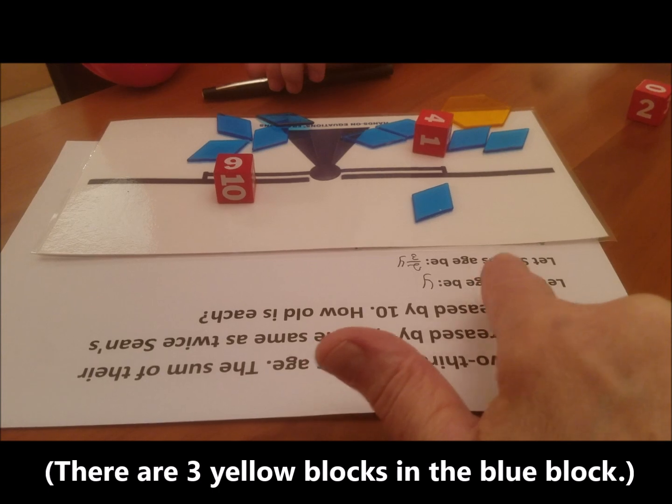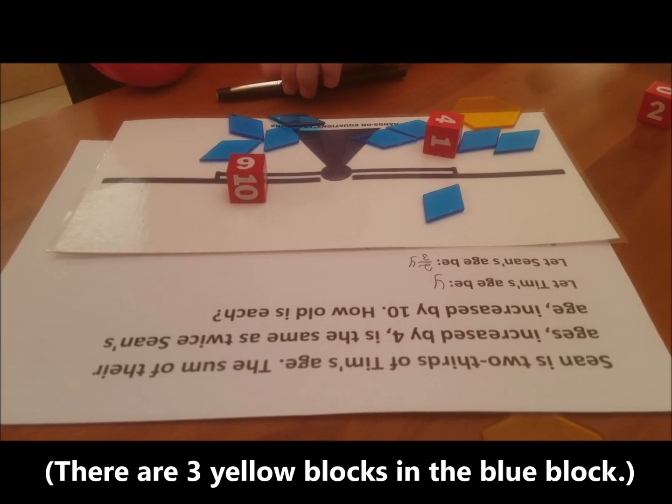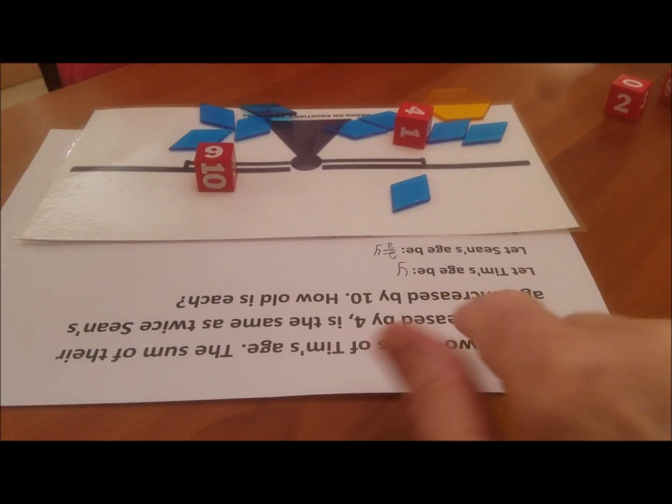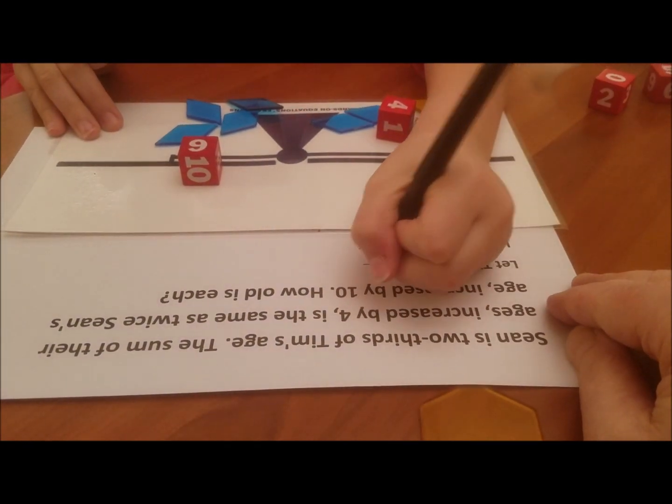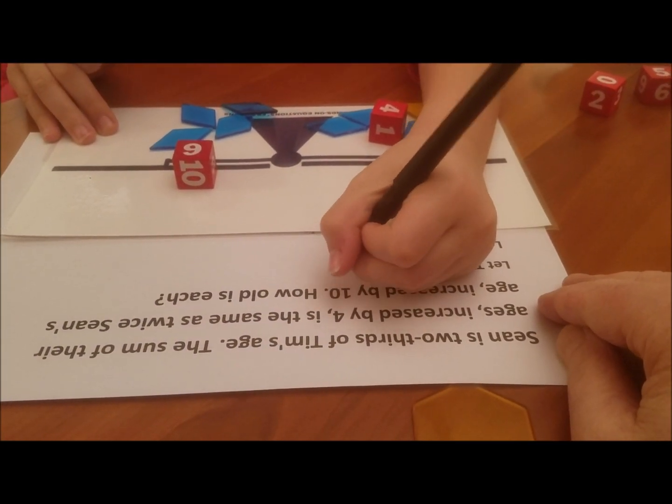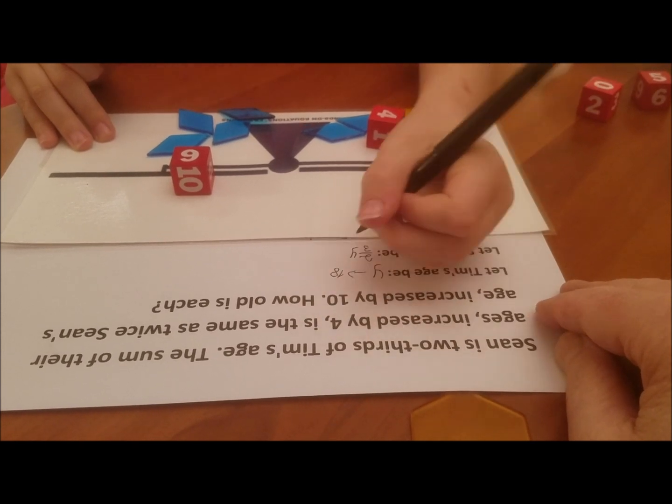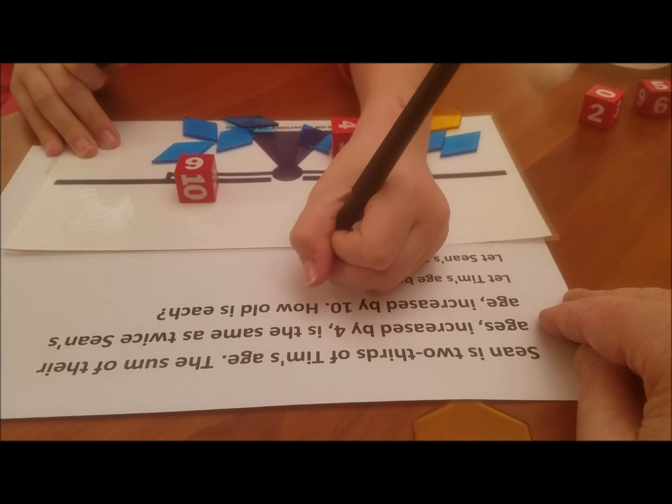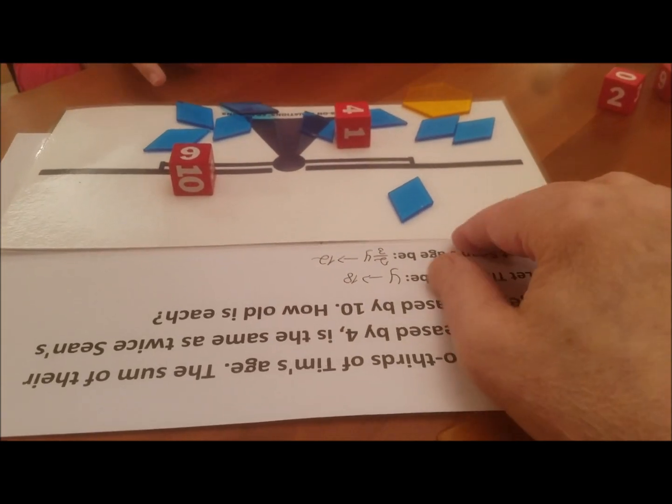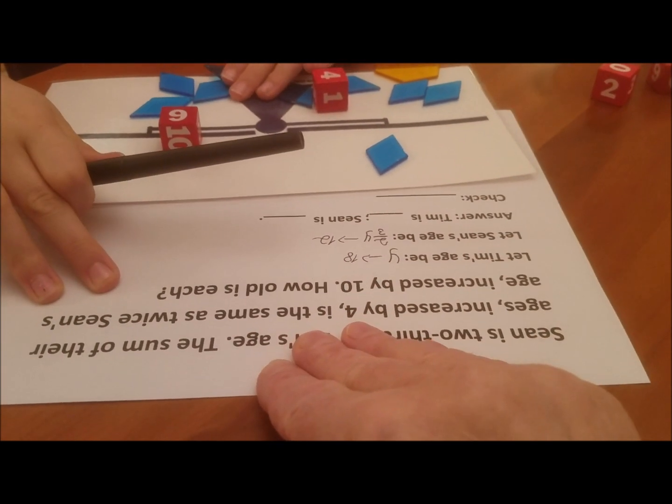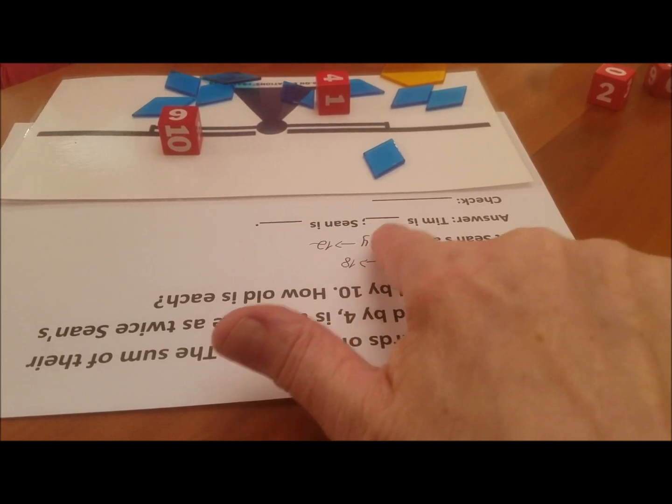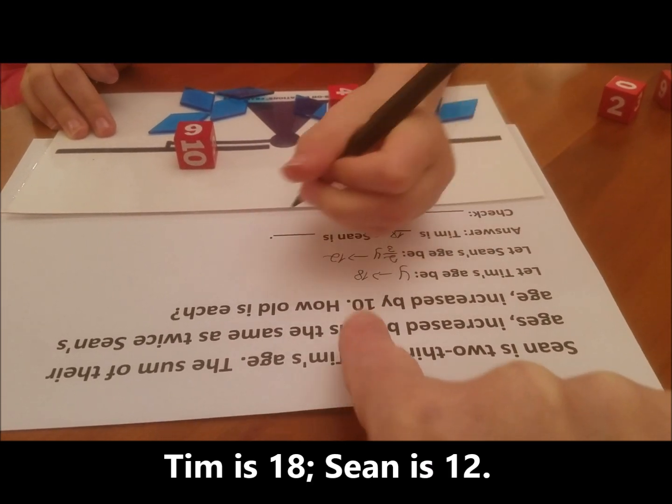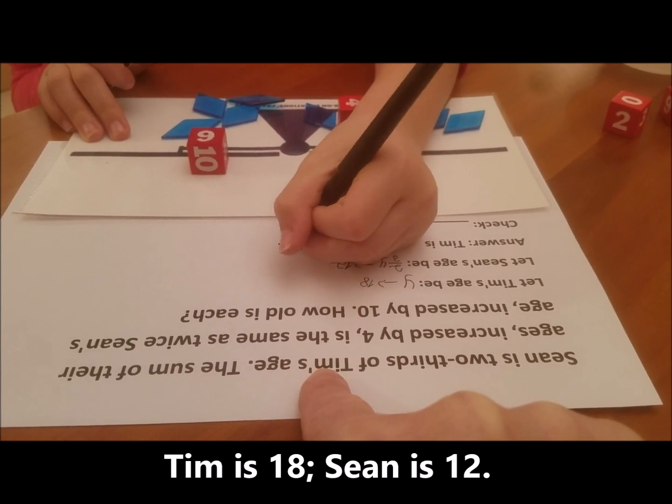Do we now know the age of either Tim or Sean? Which one do we know? Both. What would Tim's age be? Eighteen. And what would Sean's age be? Twelve. Wow. This is really amazing. So, let's lower the scale and let's write the answer over here. Tim is 18 and Sean is 12.